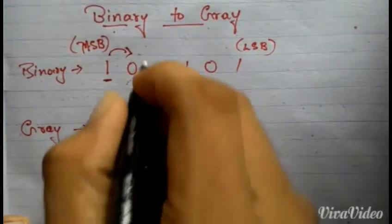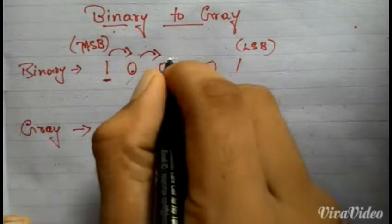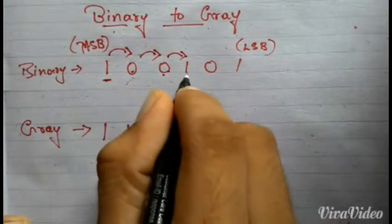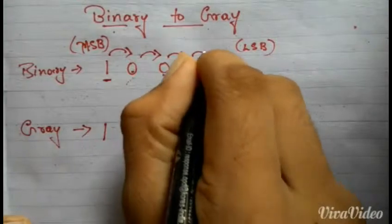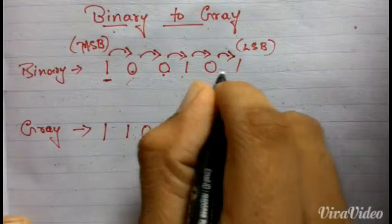Sum of this: 0 plus 1 is 1. Sum of this: 1 plus 0 is 1. And addition of 0 plus 1 is 1. This is in gray code.